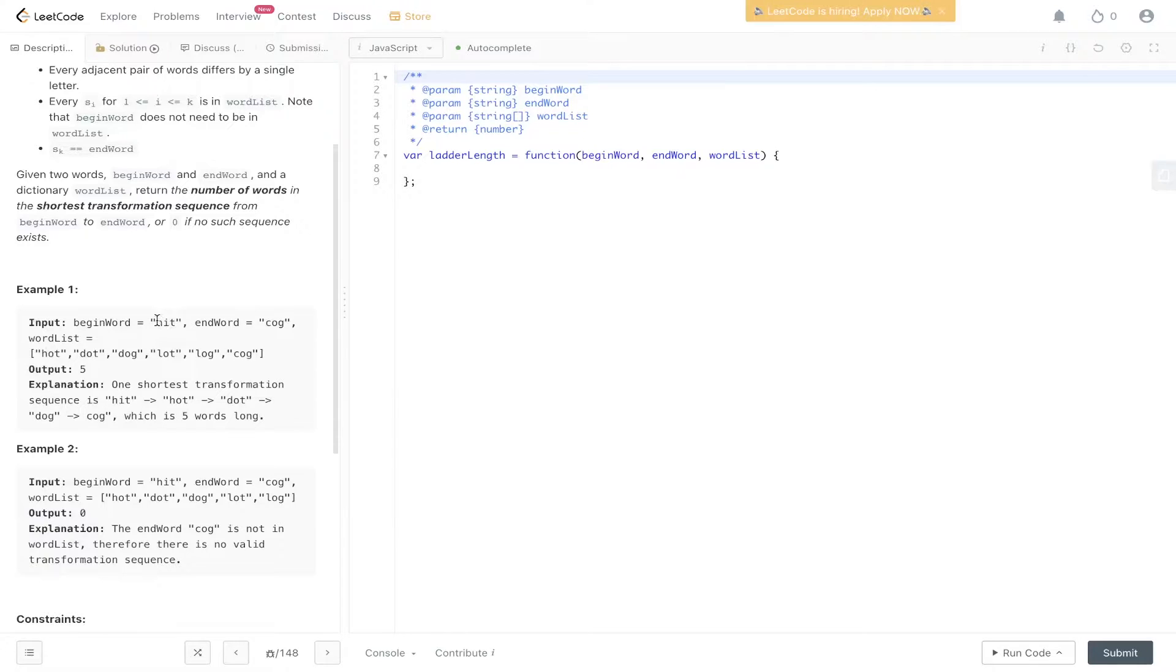In this example we have hit as our begin word and cog as our end word. We need to get from hit to cog only using the words list. We can only update or change one of the letters within the word.